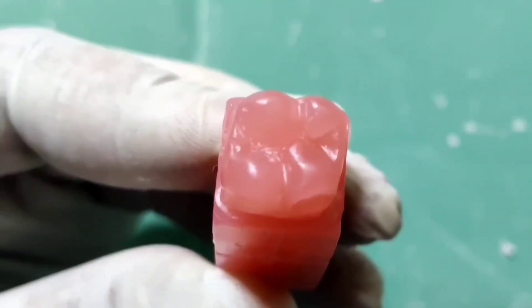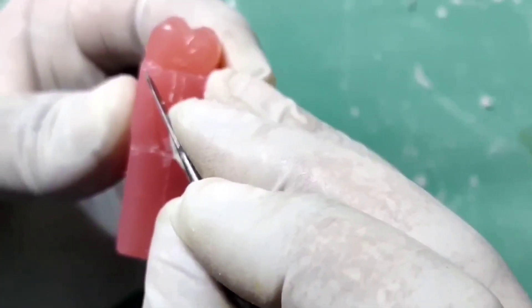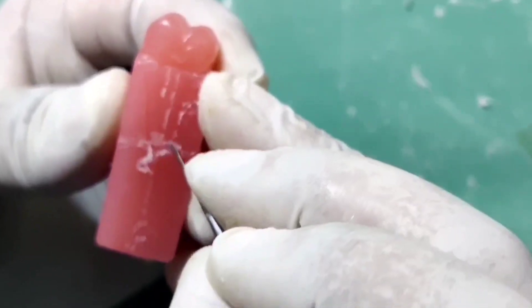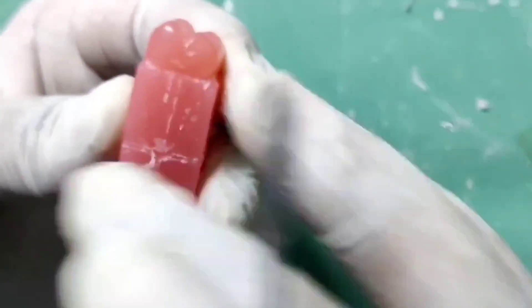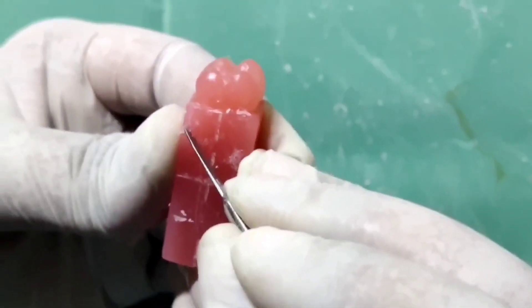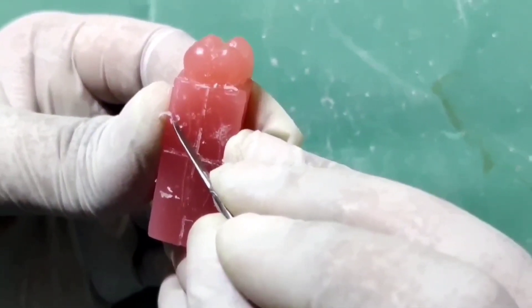Now we are done with the carving of the occlusal aspect. Now we will start the root carving. Draw mesiobuccal and distobuccal root outline.